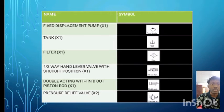Hello, I am Iswan Sanam Hanapikam. I will explain about the name of the component and quantity of the component that we used. First, fixed displacement pump in one quantity, tank in one quantity, filter in one quantity, forward three-way hand lever valve with shutoff position one quantity, double-acting with in and out piston rod in one quantity, pressure relief valve in two quantity.